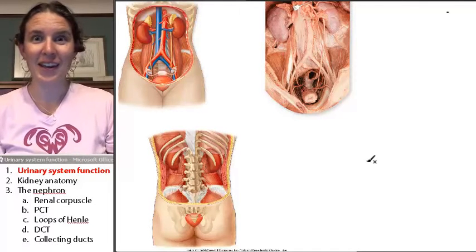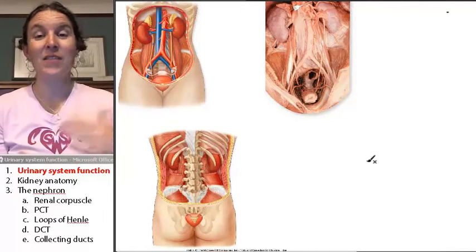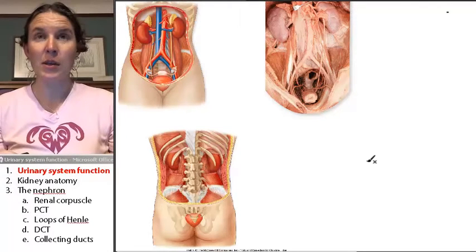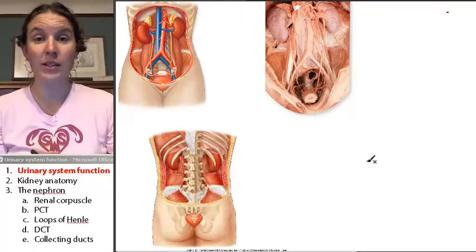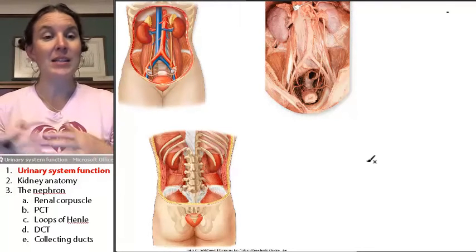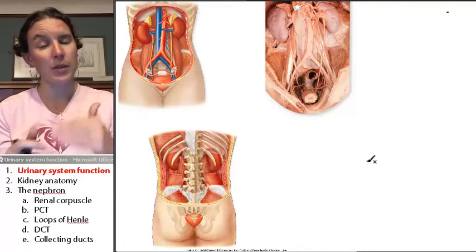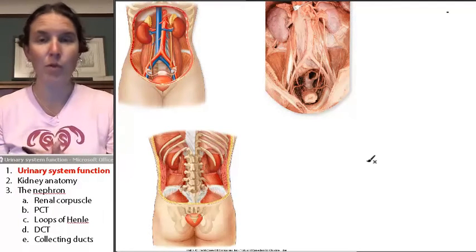Hello, everybody. Today we're going to talk about the anatomy of the urinary system. The urinary system's primary organ is the kidney, and its purpose — the system's purpose — is to filter the blood and remove harmful substances.